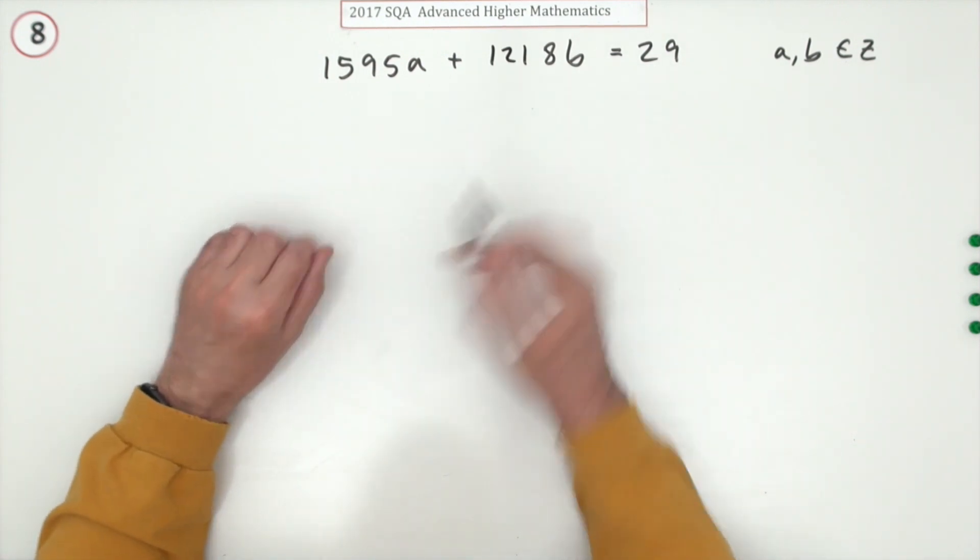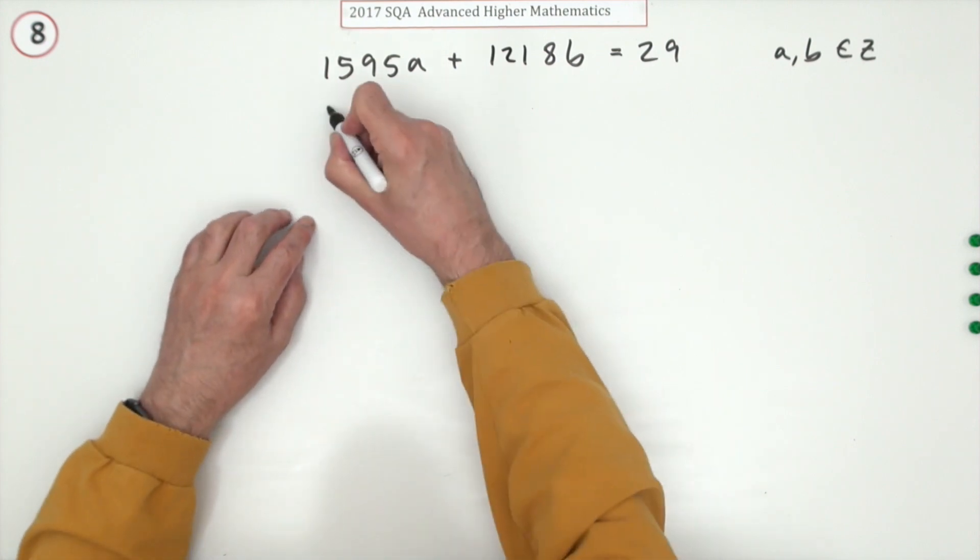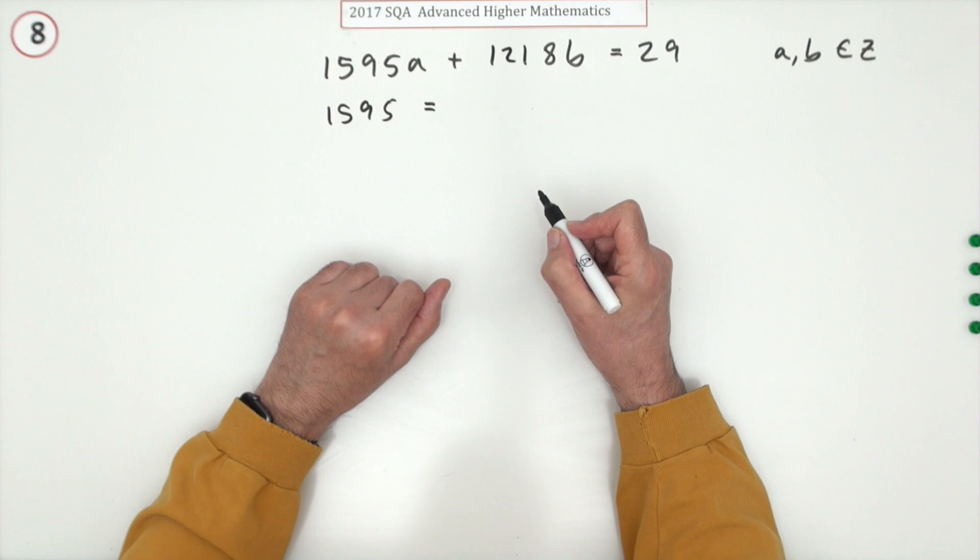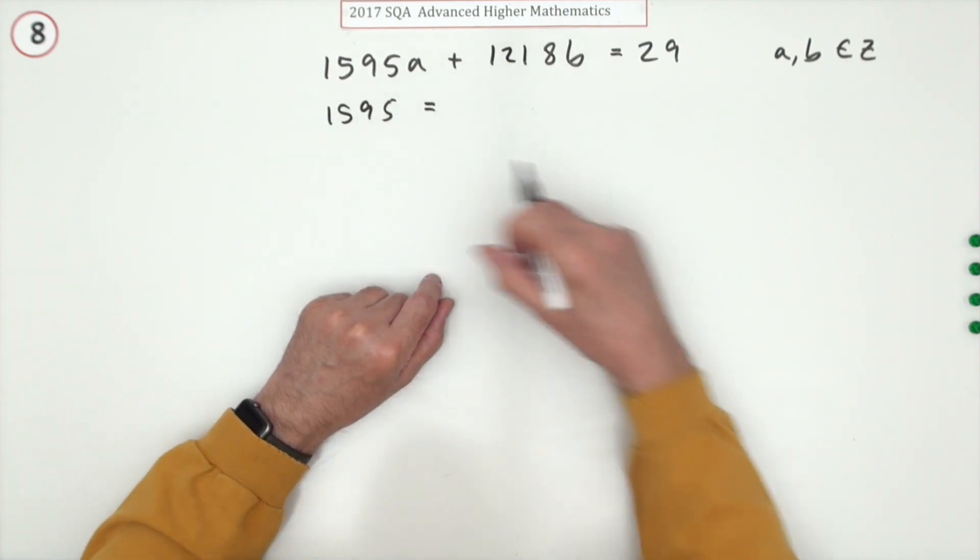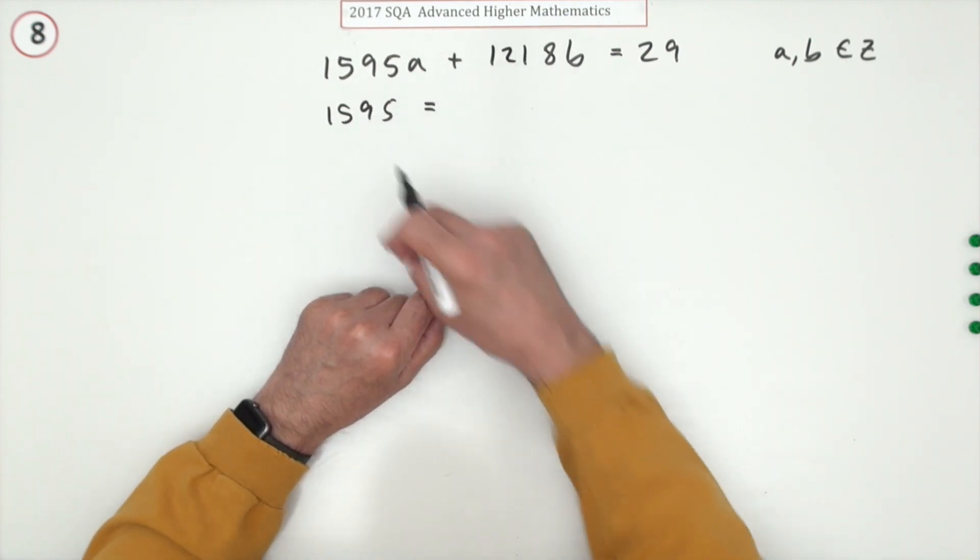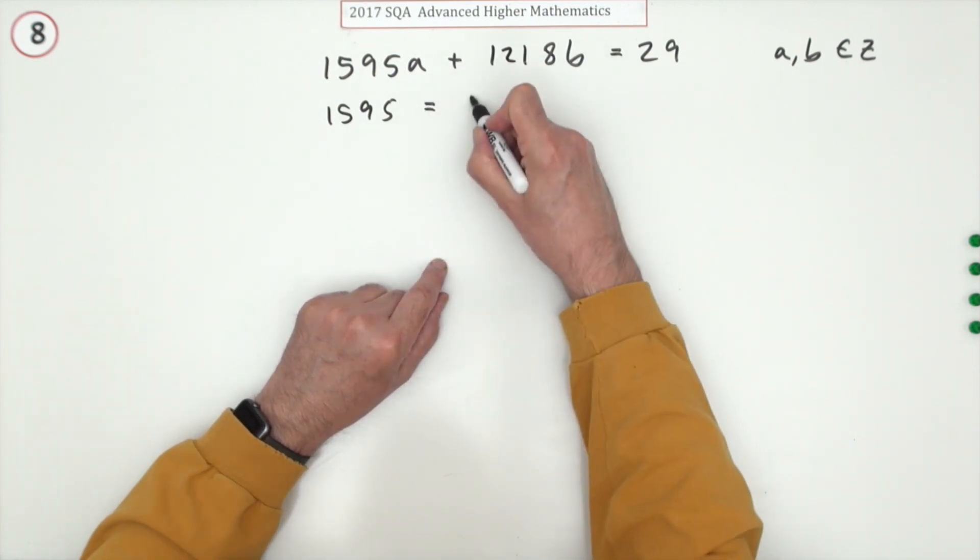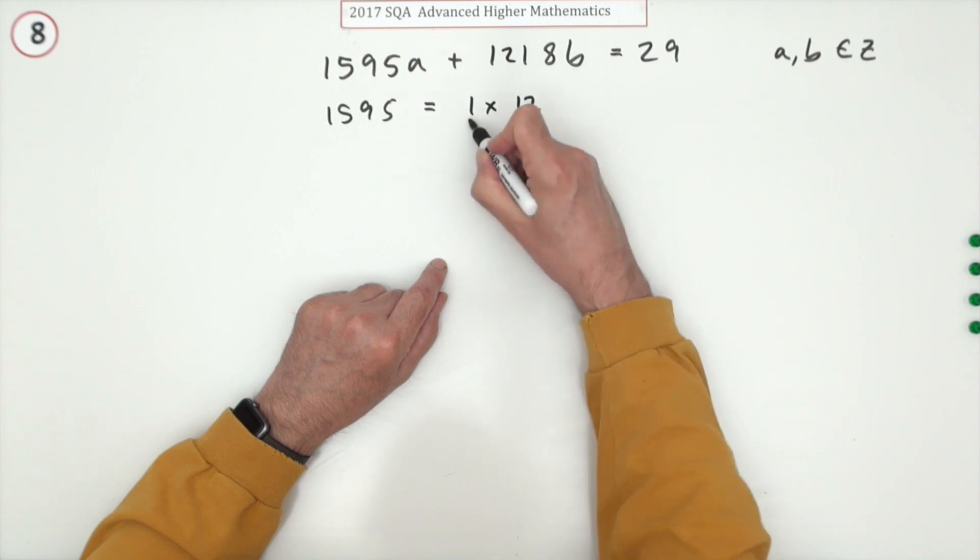So just start off the algorithm. What could be the biggest number that divides into both of these? Divide 1218 into 1595 and see if it divides exactly. Dividing that in will be one times it, so I'm going to put the one in front. I'm not actually interested in how many times it goes in.